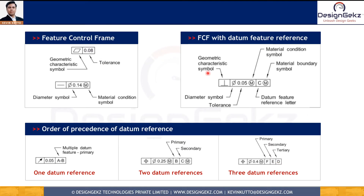The choice of whether it will be 0, 1, 2, or 3 datum references is totally based upon the function we want to achieve. As you see, datum references can also have M or L modifiers, and we can use translation modifiers beside a tertiary datum reference letter. A-B shows that two surfaces or two features of size can be used as a single datum, where A and B multiple features are collectively used as a primary datum reference.